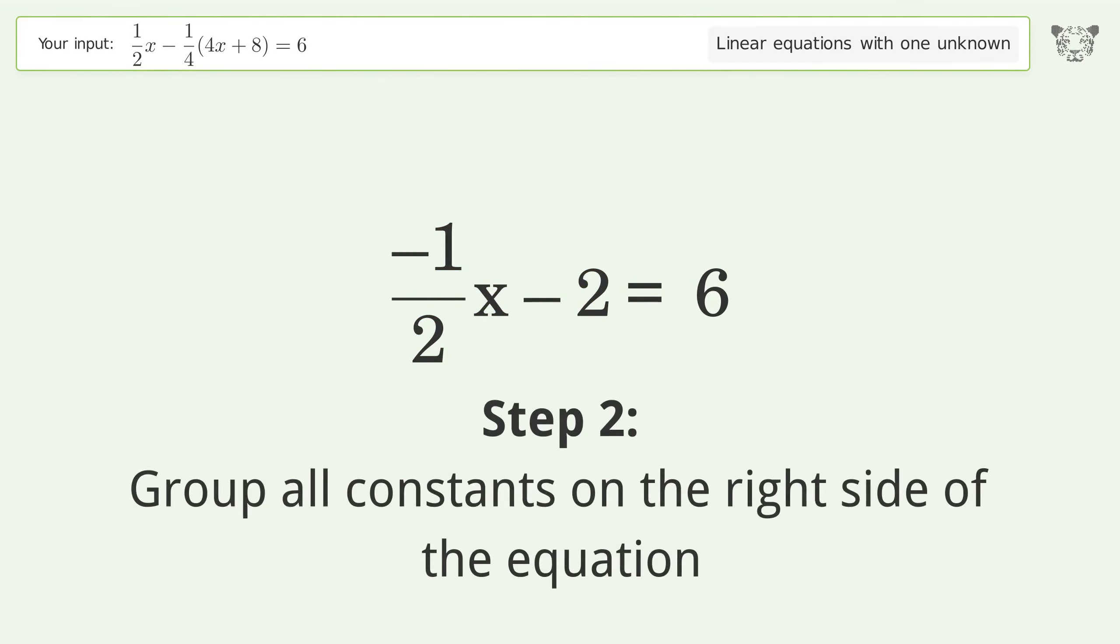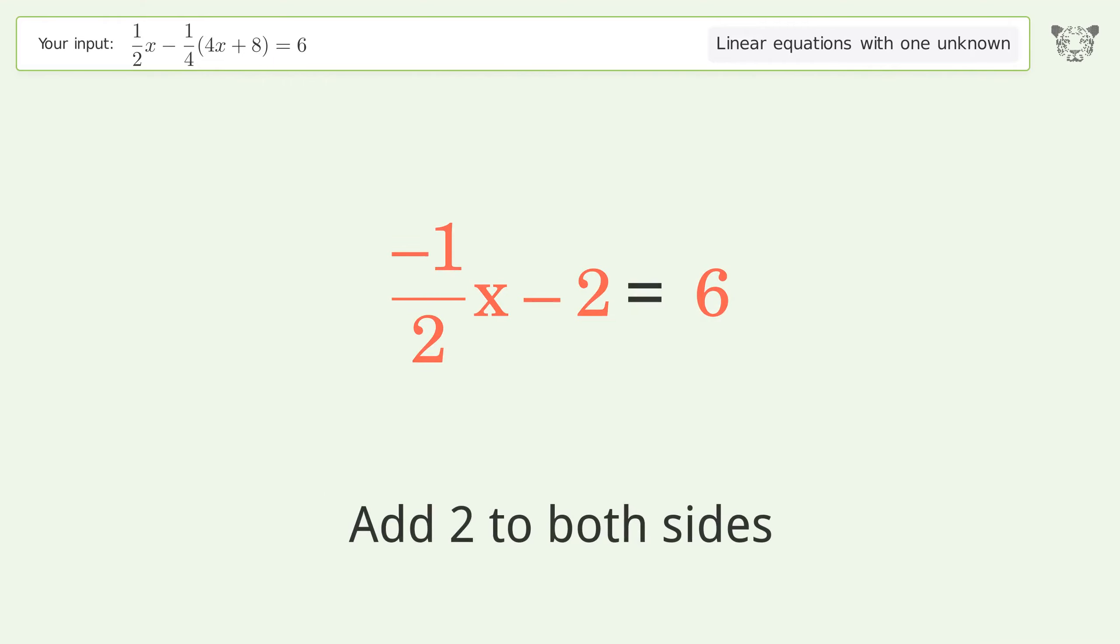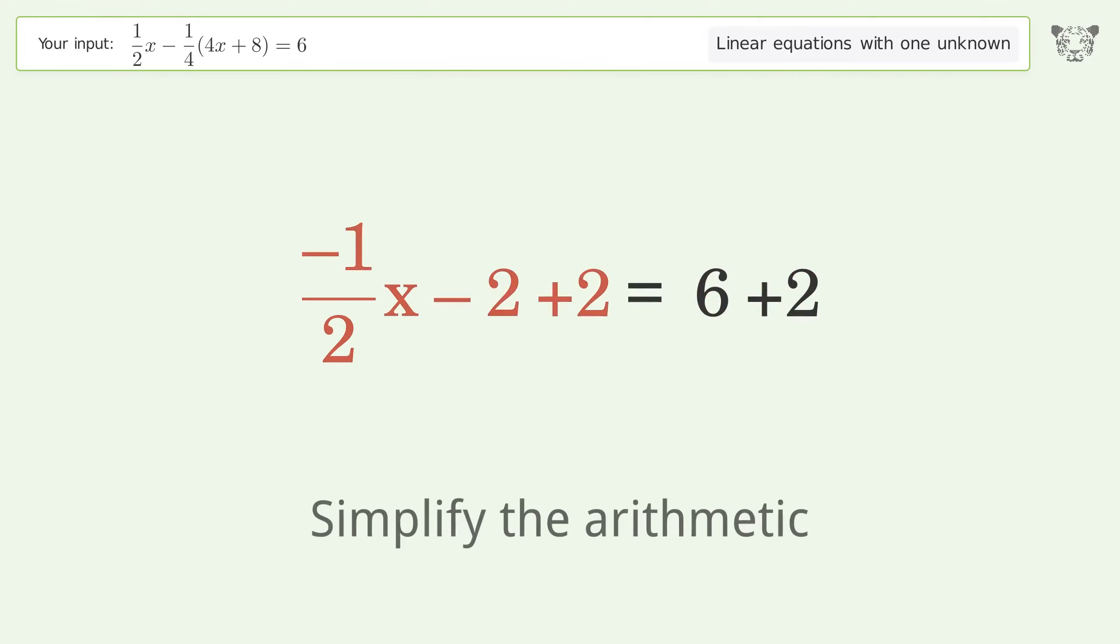Group all constants on the right side of the equation. Add 2 to both sides. Simplify the arithmetic.